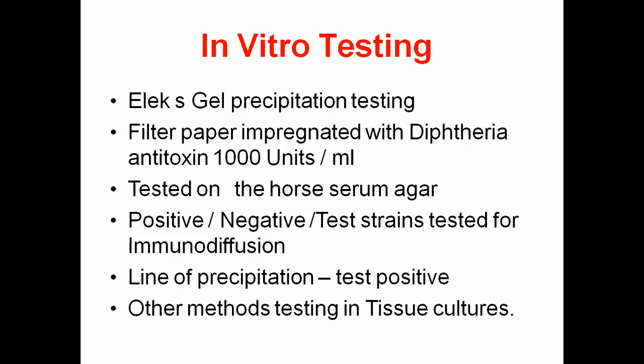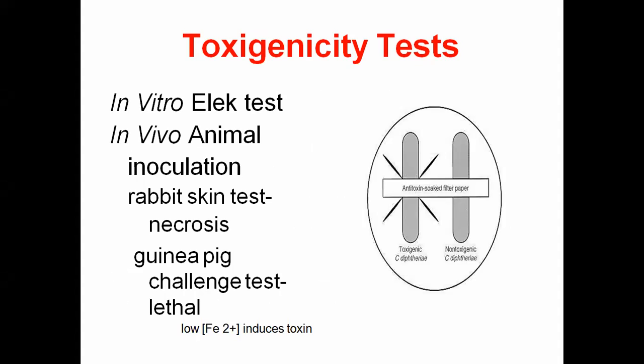In vitro: diphtheria antitoxin 1000 units per ml, tested on horse serum agar. Positive or negative result tested by immunodiffusion — line of precipitation test; positive or negative interpretation. Other method: tissue culture testing.